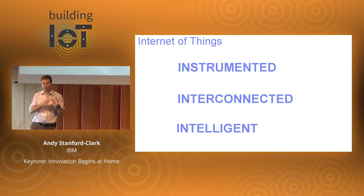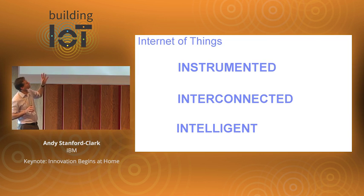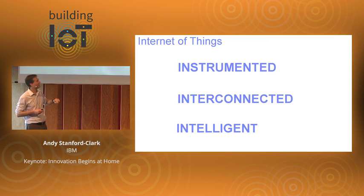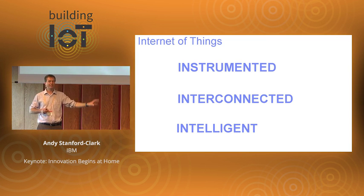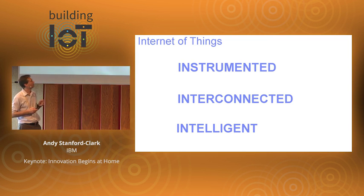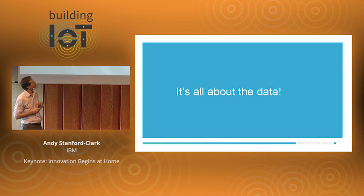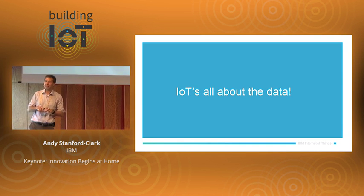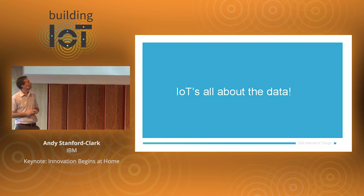For the Internet of Things, we break the world into three pieces: Instrumented — that's the sensors and actuators; Interconnected — that's the MQTT bit; and then Intelligent. Having worked on the first two for the last ten years, I now realize the intelligent bit is the important bit. It doesn't matter where the data comes from, whether it's big data or little data — it's what you do with it that's important. IoT is all about the data.